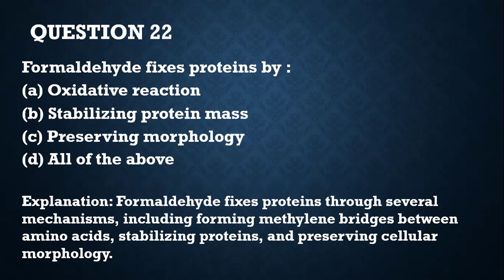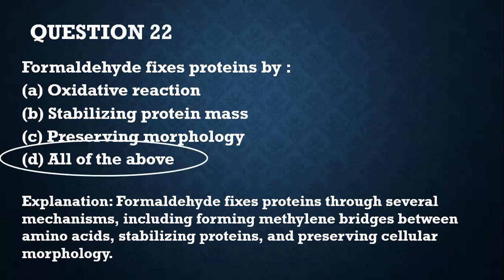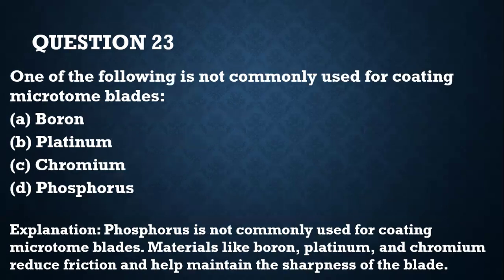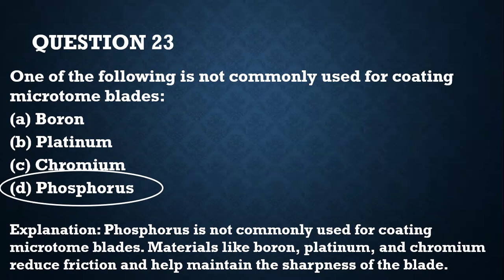Question 22. Formaldehyde fixes proteins by: A — oxidative reaction; B — stabilizing protein mass; C — preserving morphology; D — all of the above. All of the above, because formaldehyde fixes proteins through several mechanisms including forming methylene bridges between amino acids, stabilizing proteins, and preserving cellular morphology. Question 23. One of the following is not used for coating the microtome blade — that would be phosphorus. You could use boron, platinum, or chromium for coating the blade, thereby maintaining sharpness and reducing friction.